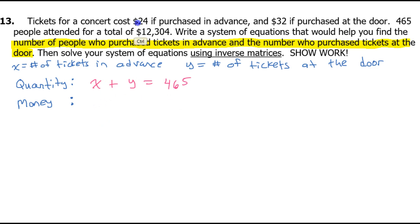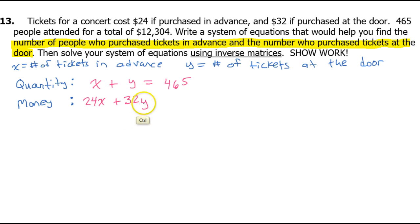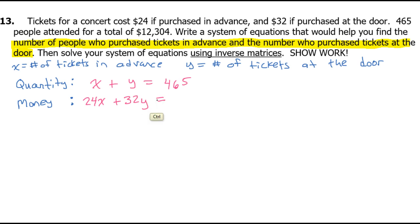Now the money equation. Tickets in advance are $24, so 24 times X gives the money from advance tickets. At $32 per door ticket, 32 times Y gives the money from door tickets. Adding those together should equal the total: $12,304. So 24X plus 32Y equals 12,304. That's your system of equations.